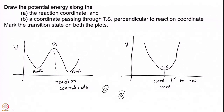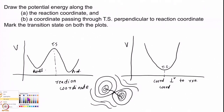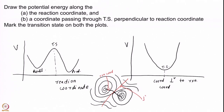Once more — in a contour plot that I have drawn a few times now — this is the reaction coordinate, and in red, this is a coordinate that is perpendicular to the reaction coordinate. Along the reaction coordinate you see a figure like this, and along the direction perpendicular to the reaction coordinate — if you are walking along this — you will get a minimum like this.